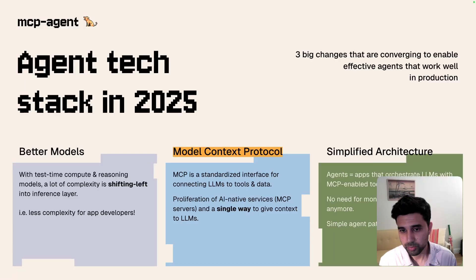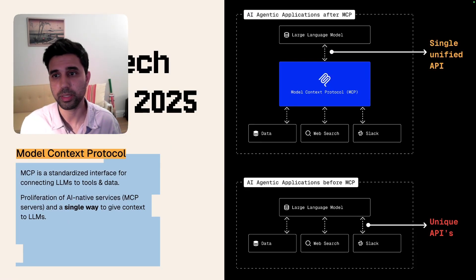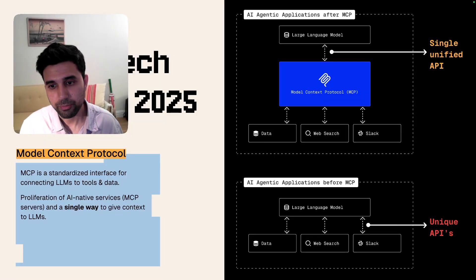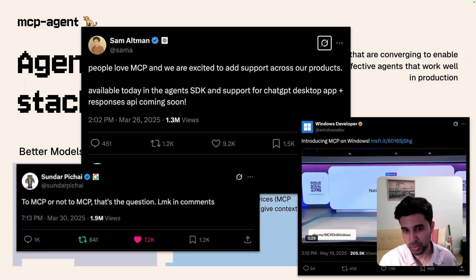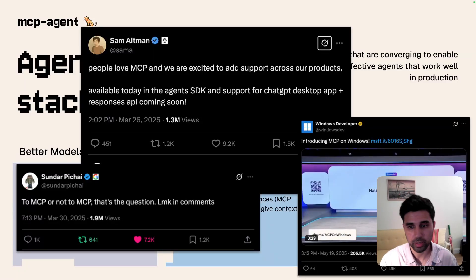The second thing is Model Context Protocol, or MCP. For folks who are not familiar, MCP is basically a standardized interface for connecting LLMs to tools, data, resources, and the world around them. The revolutionary thing about it is that it provides a single interface to connect and give context to LLMs, whereas in the past there were a multitude of platform-specific data connectors to integrate with. MCP has taken off — Google, OpenAI, Microsoft, and many other companies have all coalesced around it. It is going to become the de facto standard for how LLMs connect to the world around them.